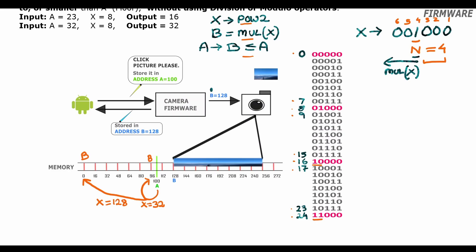Numbers that are not a multiple of x will have set bits to the right of the nth position. If x is 8, numbers between 8 and 16 will have set bits in the LSB, second, or third bit positions. So given any number a lying between two multiples of 8, if we unset all bits to the right of the fourth bit position, we reduce a to a multiple of 8. For example, 17 becomes 16, 15 becomes 8, and 9 becomes 8.